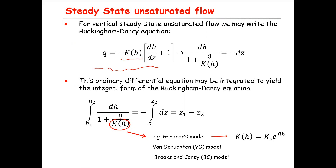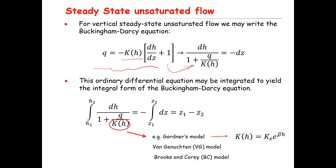You can rearrange this equation and express it as dh divided by (one plus q divided by K(h)) equals minus dz. Taking the integral from each side with proper limits from z1 to z2 and h1 to h2 gives us the integral form of the Buckingham-Darcy equation.